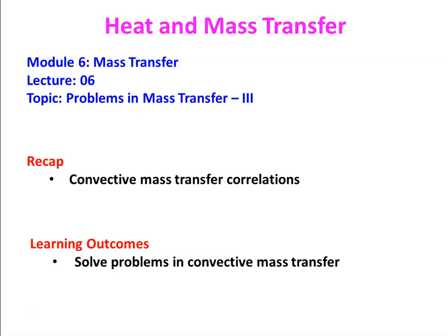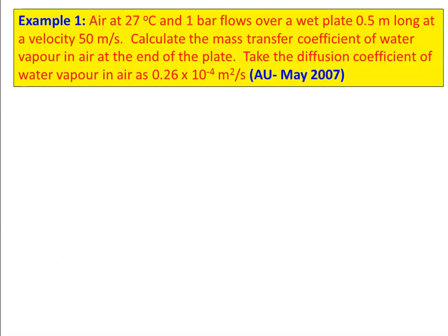We take example number one from May 2007 question paper. Vapor-air at 27 degrees Celsius and 1 bar flows over a wet plate 0.5 meter long at a velocity of 50 meters per second. Calculate the mass transfer coefficient of water vapor in air at the end of the plate.